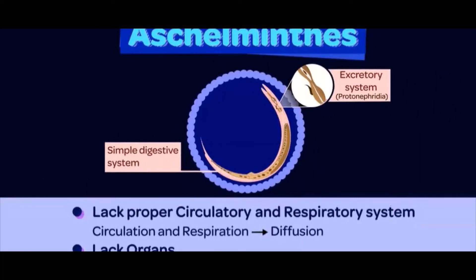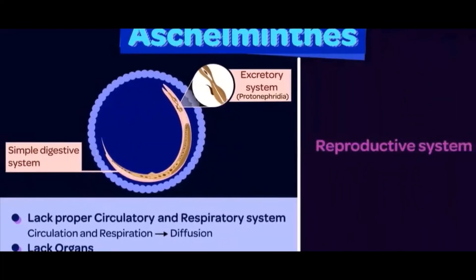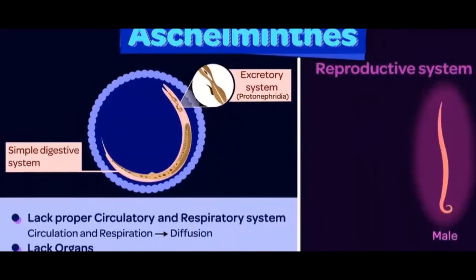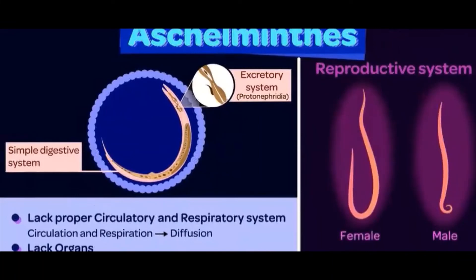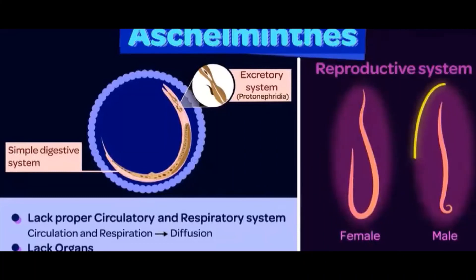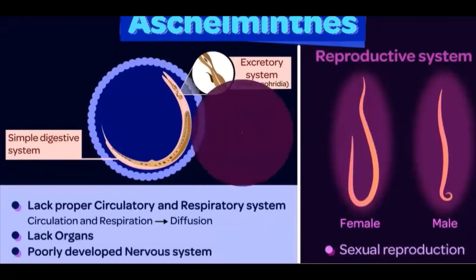Another important system is the reproductive system. Aschelminthes are unisexual organisms, meaning males and females are separate individuals. Females are usually larger in size compared to males, which helps in identifying the organism. Reproduction occurs sexually, and fertilization is also internal.